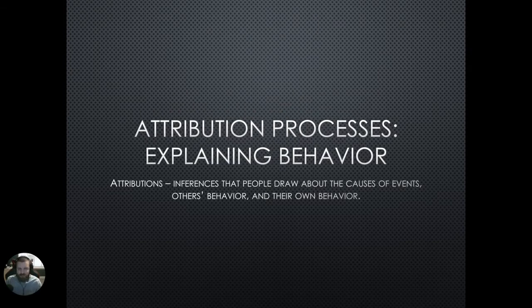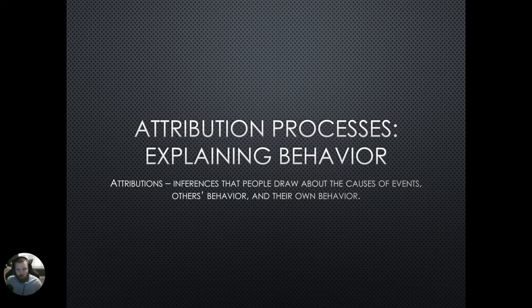The first lesson of social psychology is on the attribution process, which basically means: how do we explain human behavior? When something happens — whether you're witnessing it or it's your own behavior or someone else's behavior — we make explanations for why those things occurred. These explanations are called attributions.